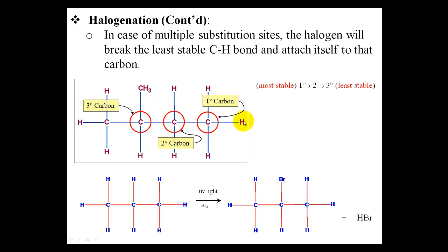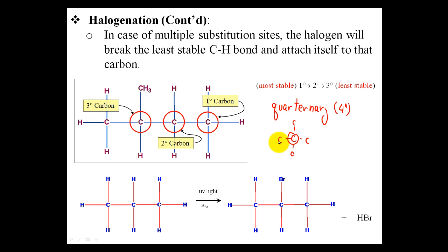To determine where the halogen attaches, we must define primary, secondary, and tertiary carbons. A primary carbon (1°) is bonded to just one other carbon. A secondary carbon (2°) is bonded to two other carbons, and a tertiary carbon (3°) is bonded to three. There is also a quaternary carbon (4°) bonded to four other carbons. Primary carbons are the most stable, whereas tertiary or quaternary are least stable.